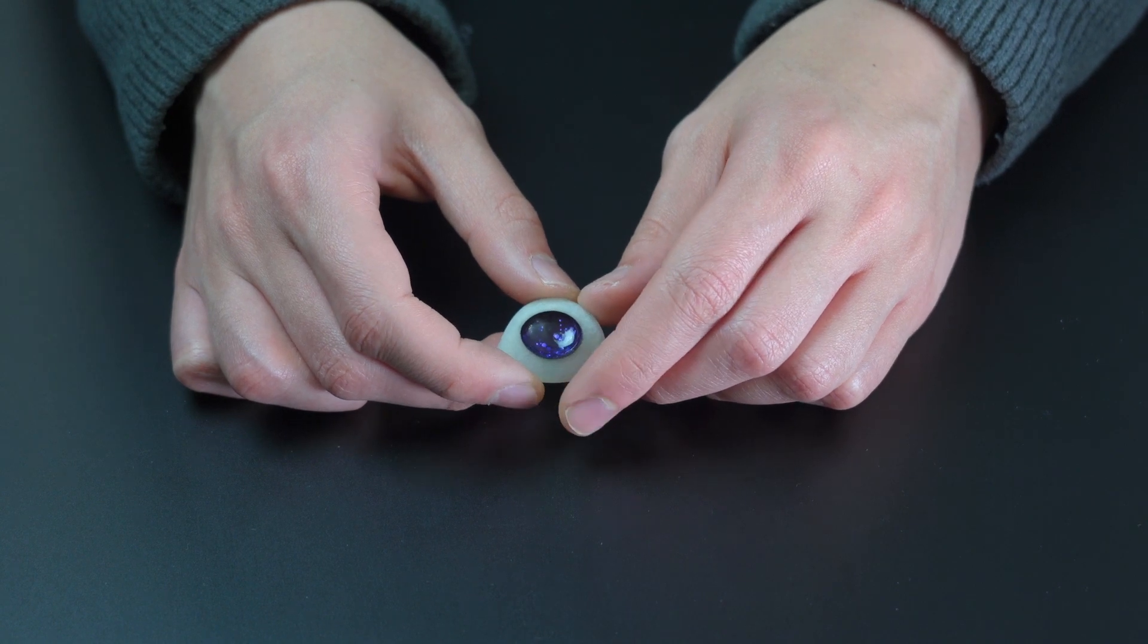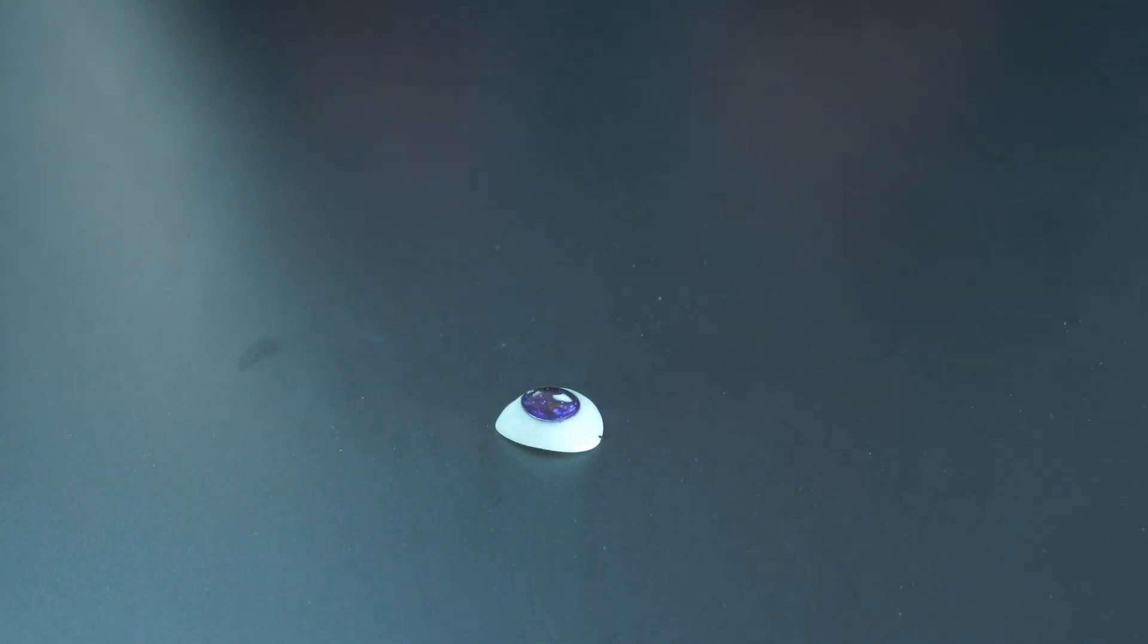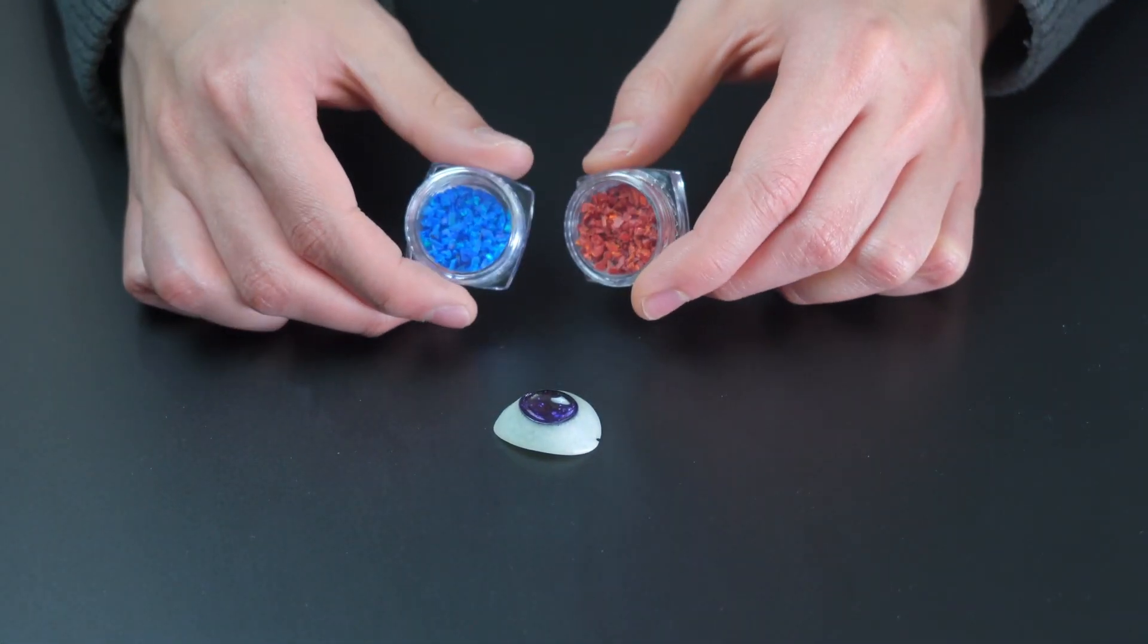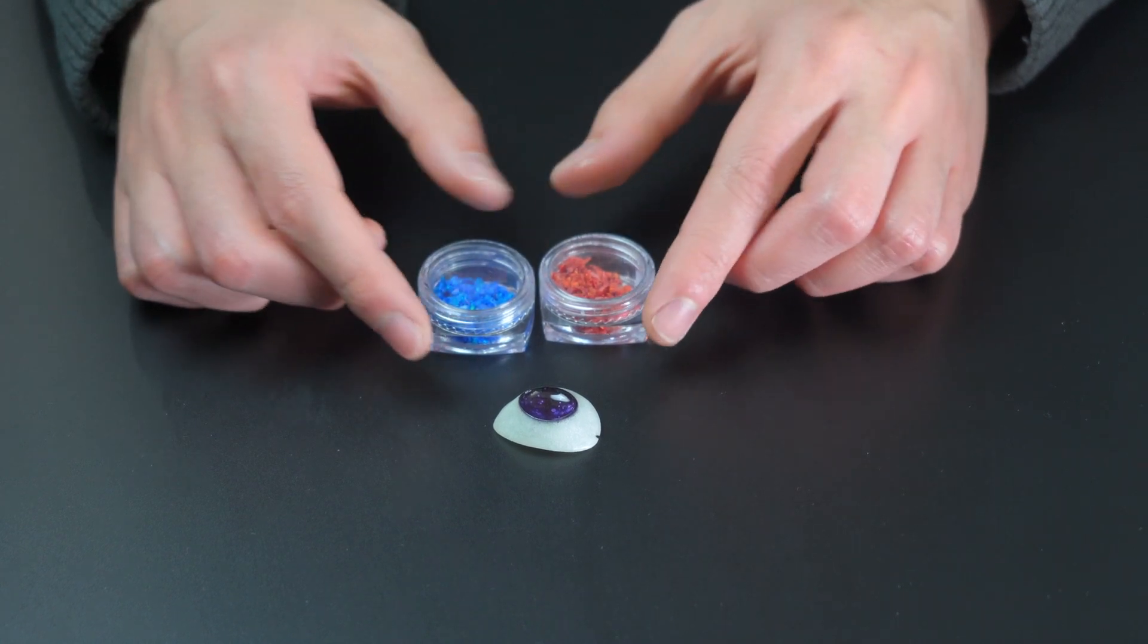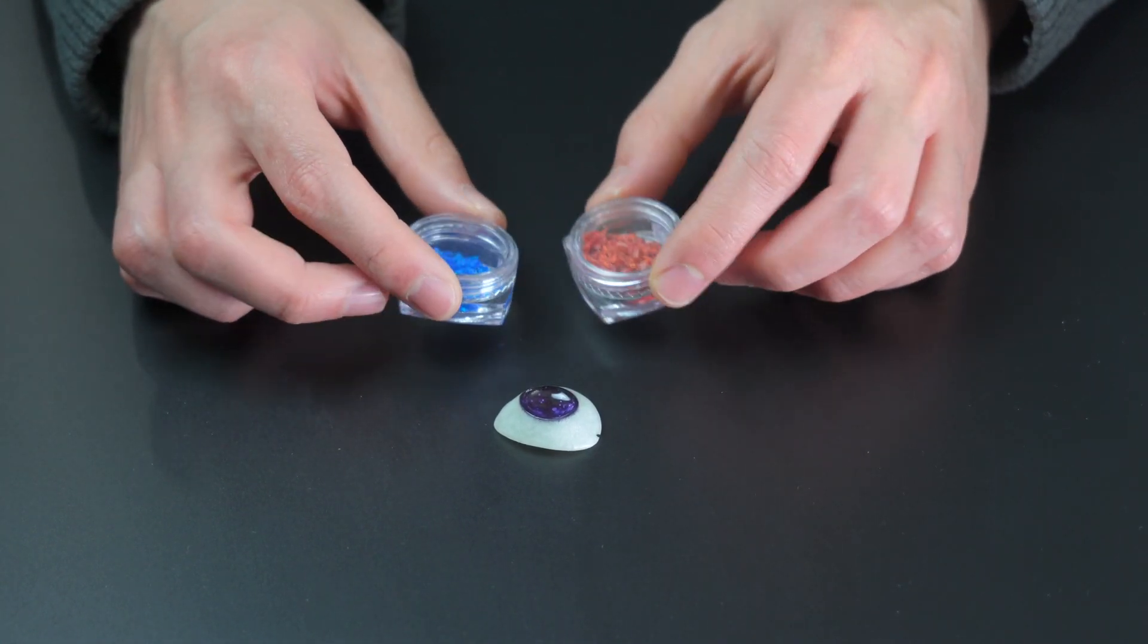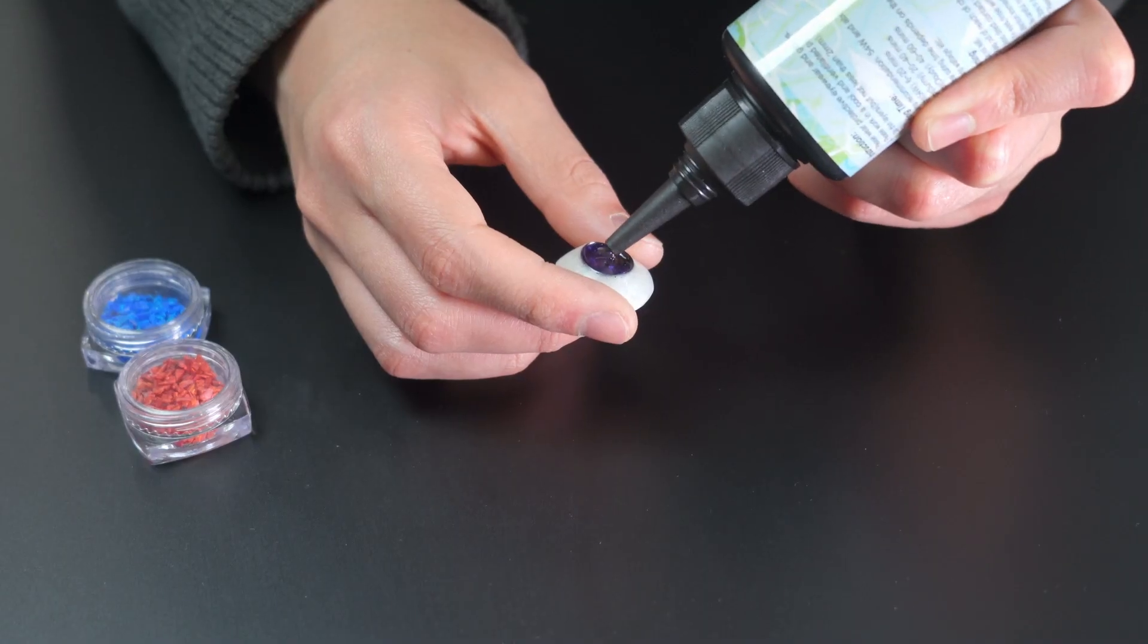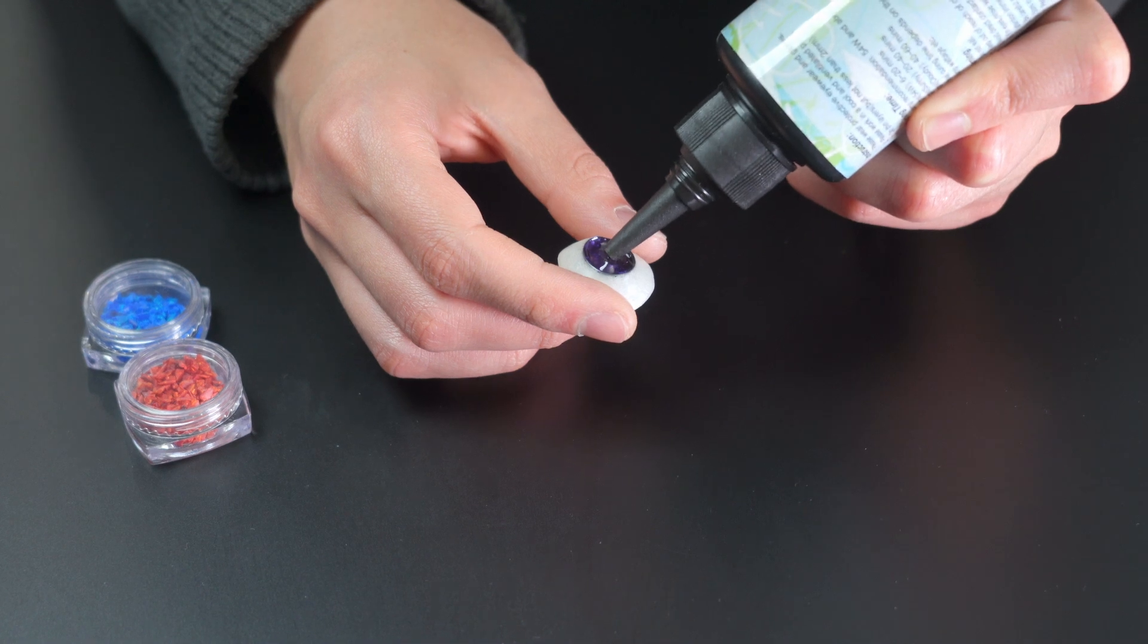But I think this time what I'm going to use are opal inlays. This is for guitar making. I used to DIY my own guitars but I haven't used these yet, so why not use it now. So first I'm going to put a very thin layer of UV resin just so the opal has something to stick to.